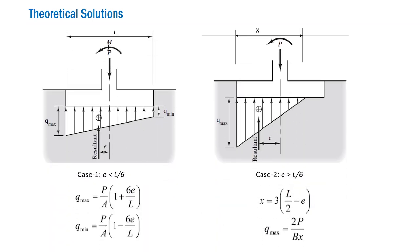Let me quickly review the theoretical solutions. In the small eccentricity case, eccentricity E equals M/P is less than L/6, meaning the entire footing length is in contact with the soil, so all soil pressures are compressive. The maximum pressure at one end is given by Q_max = (P/A)(1 + 6E/L), and the minimum at the other end is Q_min = (P/A)(1 − 6E/L).